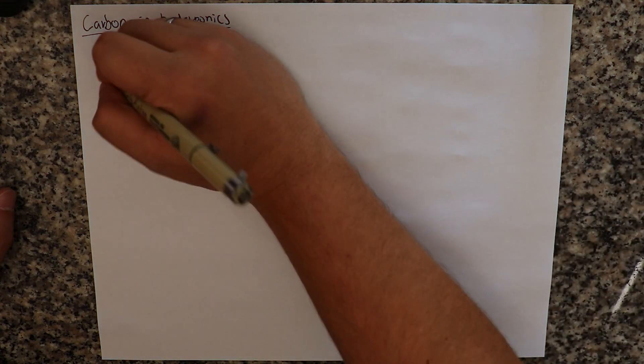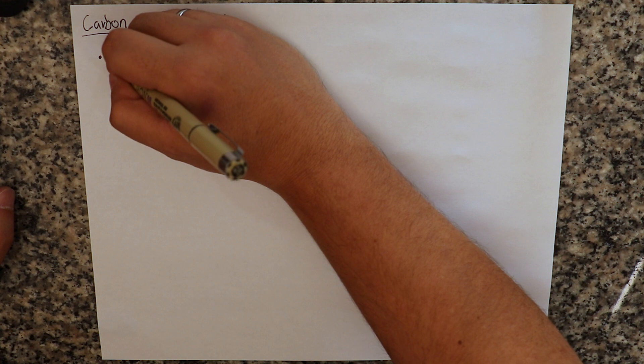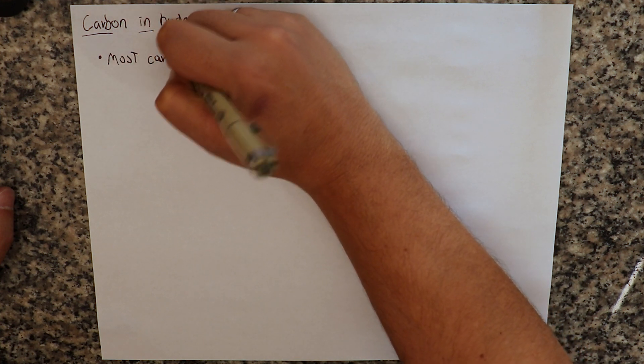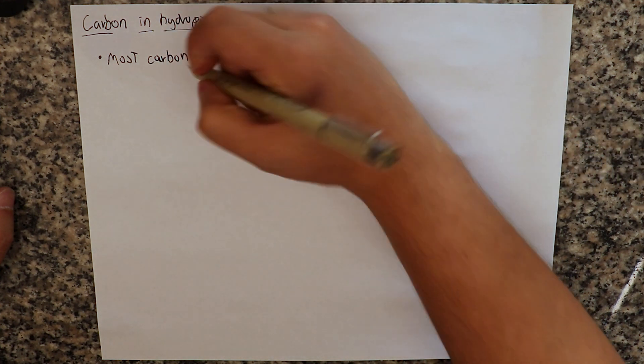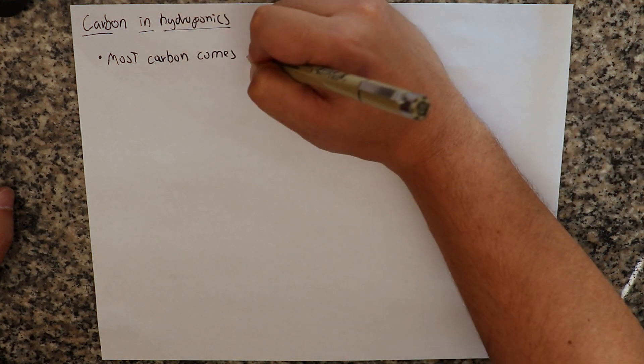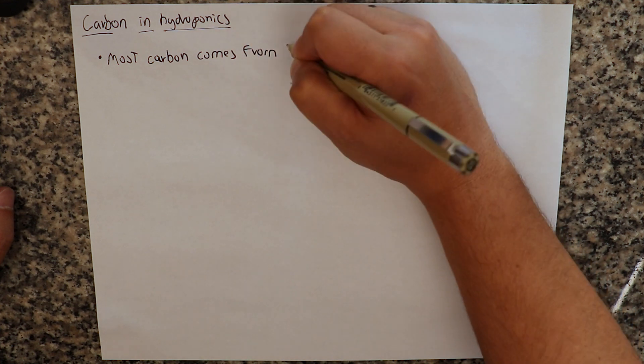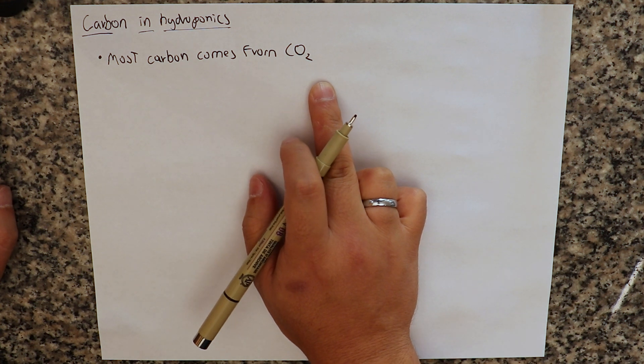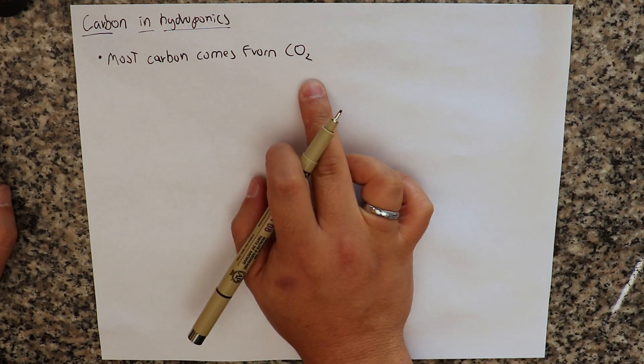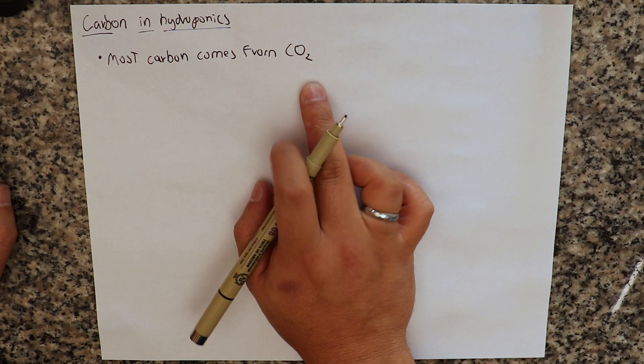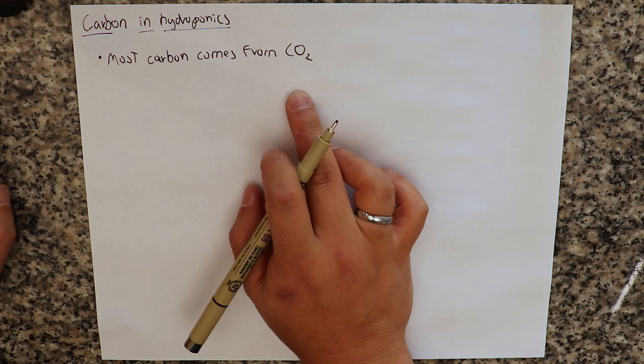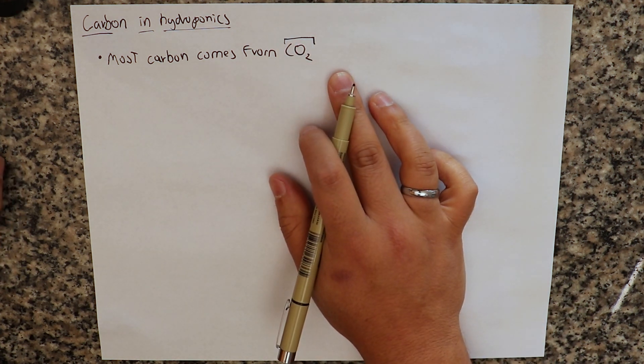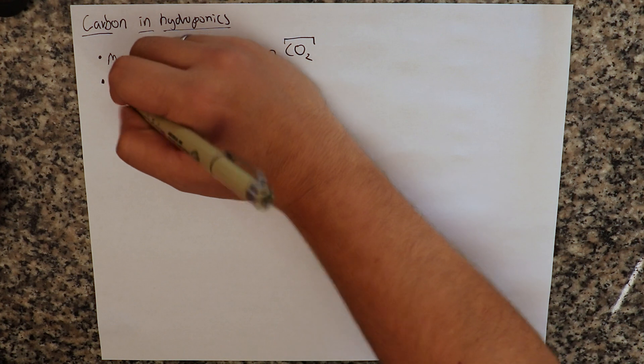So what do we know? The first thing is that most carbon in a hydroponic crop comes from CO2. Most carbon in a plant grown hydroponically comes from CO2. So what we are going to talk about today is not about CO2. We're not going to be talking about photosynthesis, but we're going to be talking about another point.